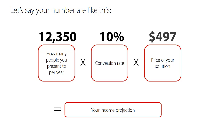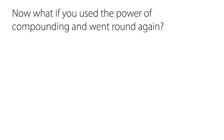Here's how it pans out on the number side: 12,350 people, conversion rate stays the same, price stays the same, and now we have $613,795. That is a great result. The cost to get people might go up, so you might not get as many people to the webinar — be conservative, take it down to 10,000 or 11,000 people, change your conversion rate, whatever makes you happy. But understand the power of compounding — it's still going to produce ridiculous results. This is what most people do not realize, and it's so exciting once you know your conversion rate.